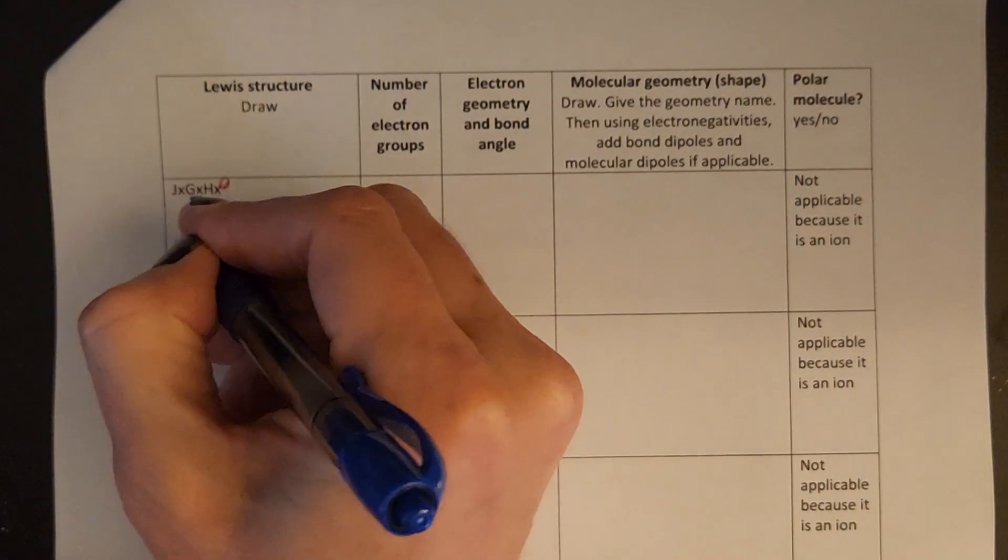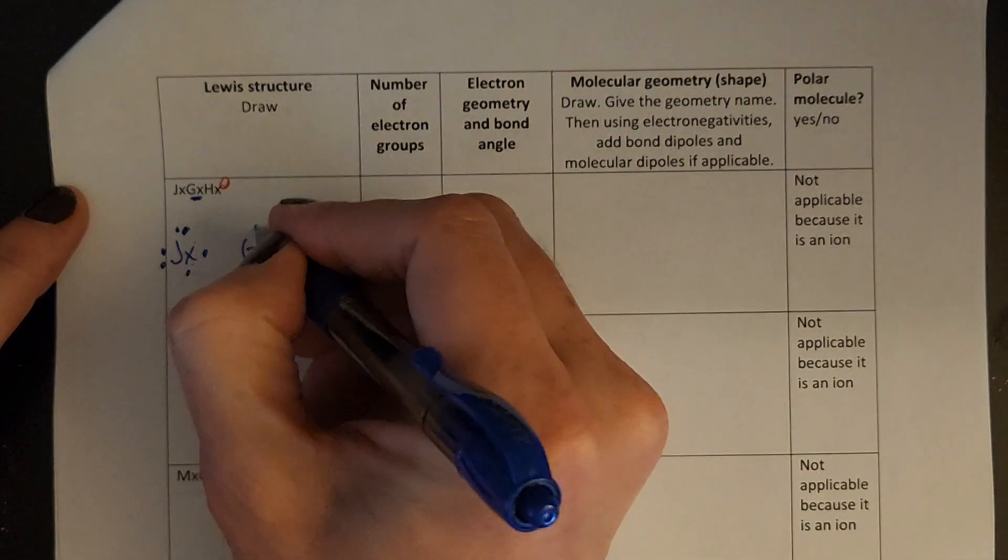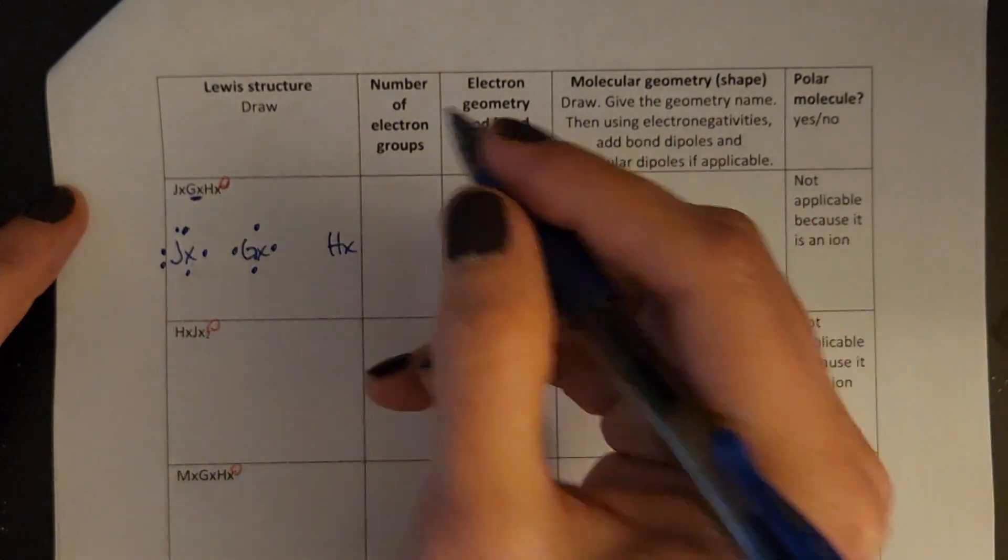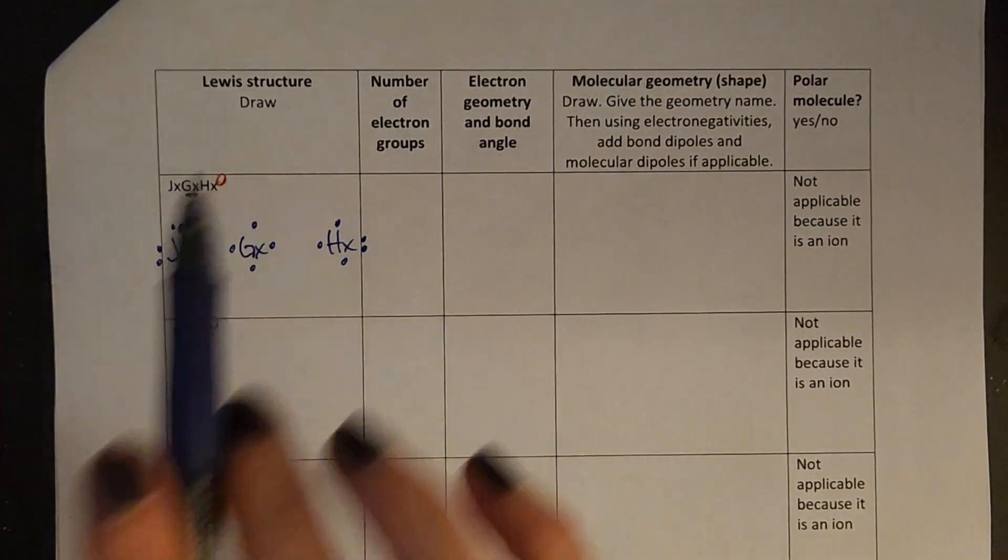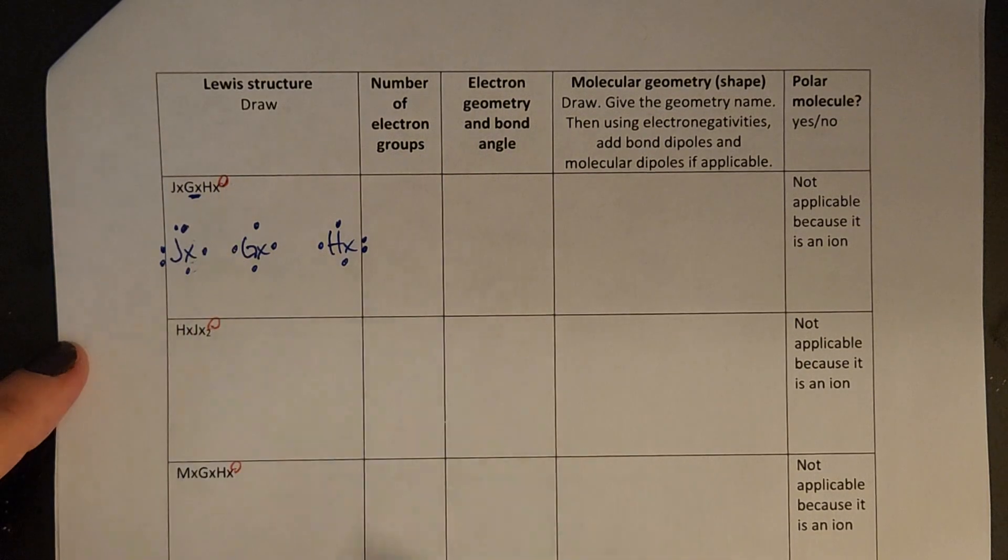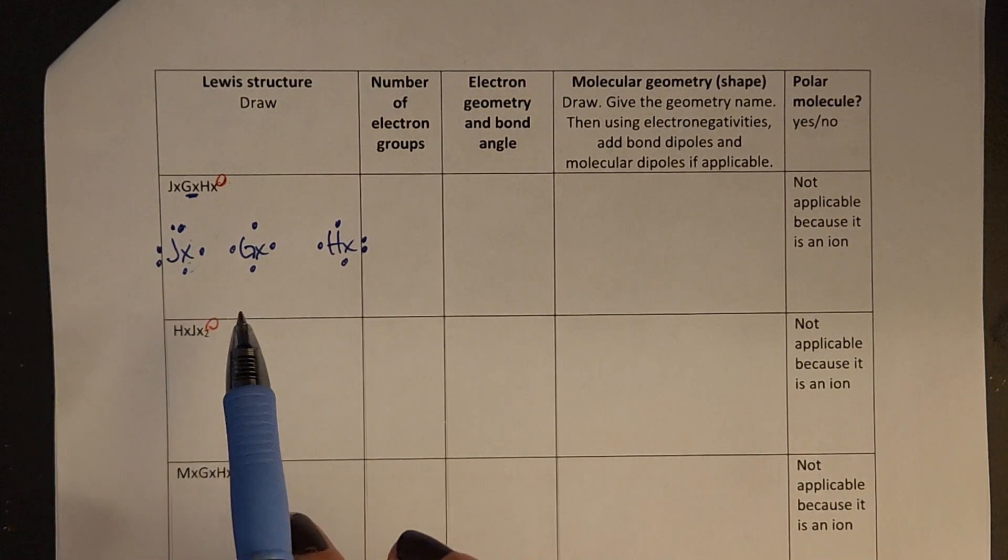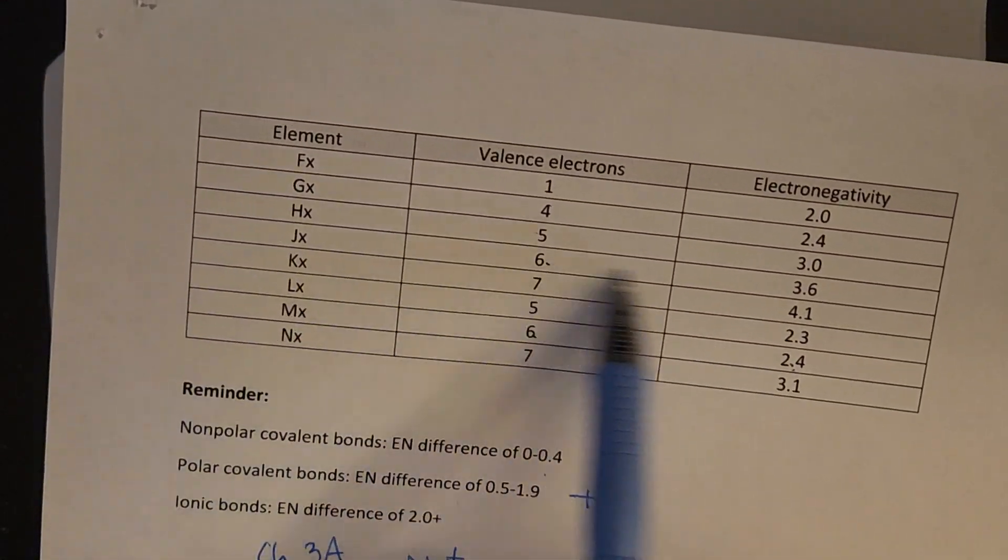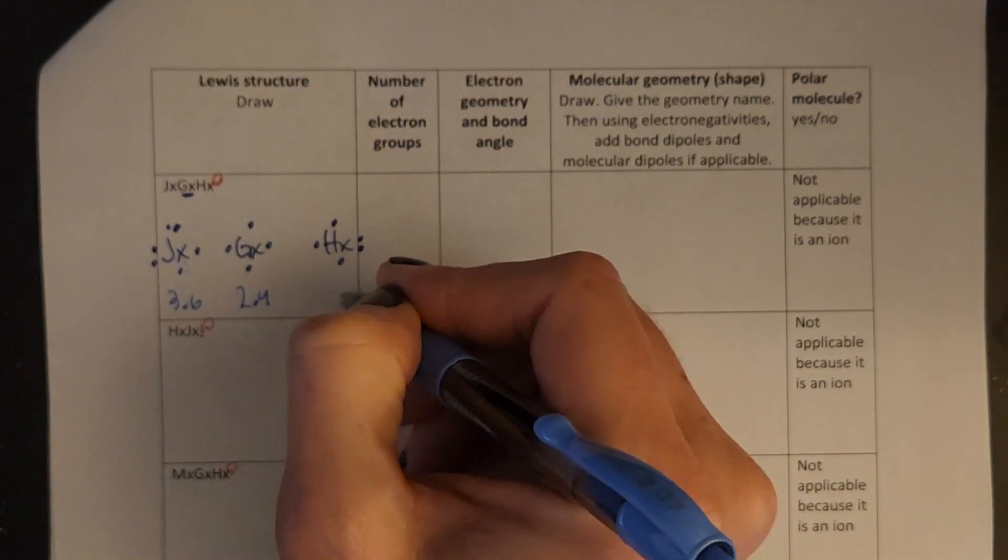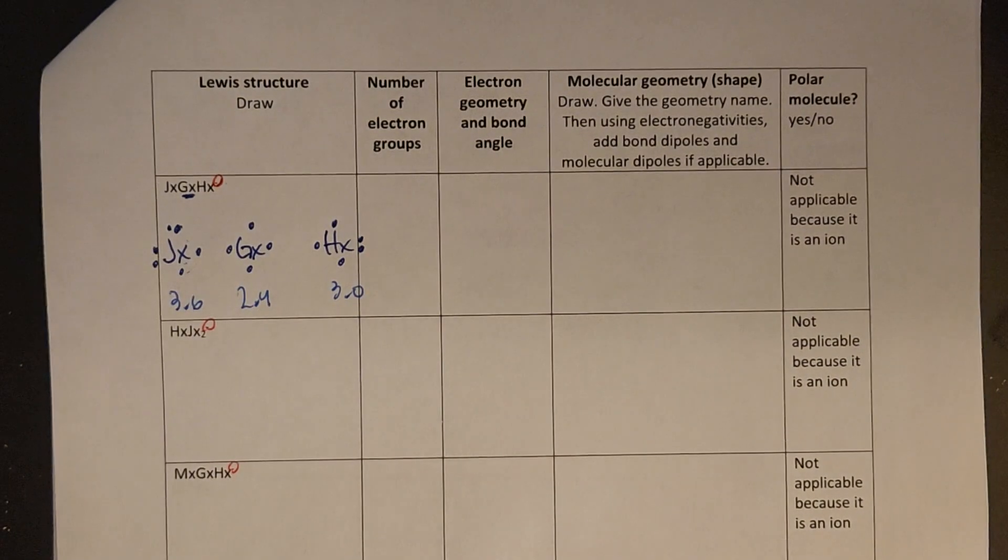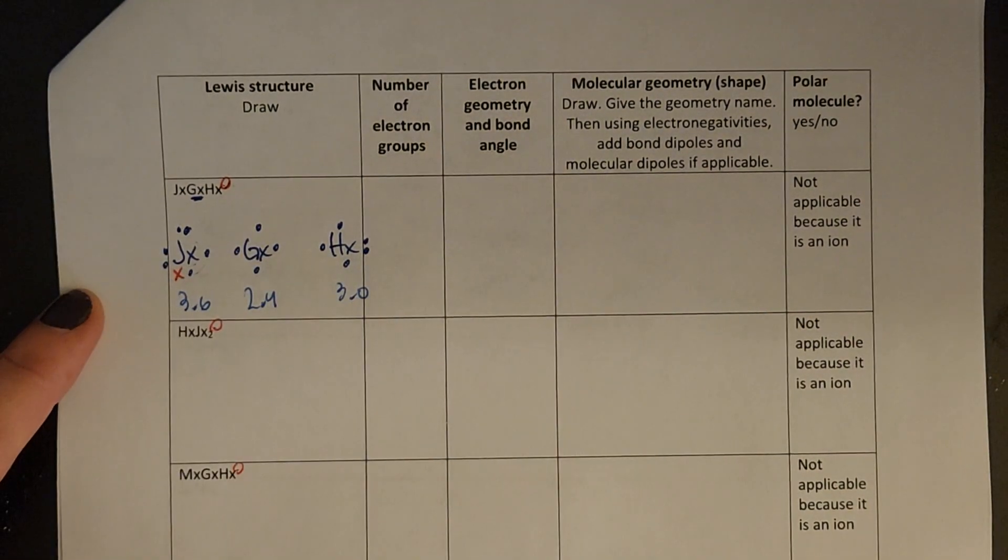So J has 6, so I go 1, 2, 3, 4, 5, 6, leaving the unpaired electrons kind of towards the middle. Gx has 4, and then Hx had 5, 1, 2, 3, 4, and then I'll put the fifth one over here. Now, next thing I want to do is add those extra electrons on. So a negative 1 charge means I get one extra electron. And to figure out where I'm going to put it, it always belongs best where the electronegativity is smallest. So Jx is 3.6, Gx the electronegativity is 2.4, and H is 3.0. So that lets me know that my extra electron is going to go to the most electronegative or most electron-wanting element.